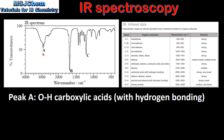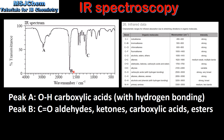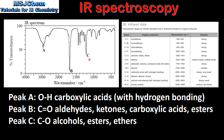Peak A occurs at a wavenumber of approximately 3000 cm⁻¹. This corresponds to the OH bond in carboxylic acids. Peak B occurs at a wavenumber of 1700 cm⁻¹, which corresponds to a carbon-to-oxygen double bond in aldehydes, ketones, carboxylic acids and esters. Finally, peak C occurs at a wavenumber of approximately 1200 cm⁻¹, which corresponds to a carbon-to-oxygen single bond in alcohols, esters and ethers.